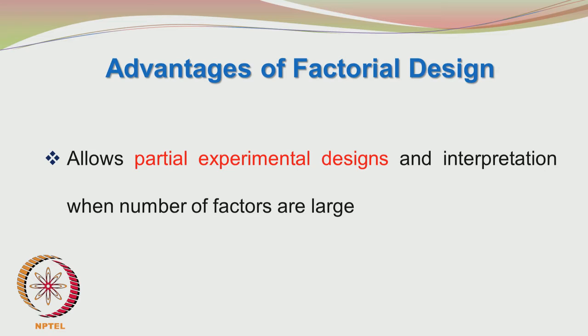Even when you have a factorial design which minimizes the number of experiments, sometimes you may have a large number of factors to study and even a factorial design would make things cumbersome. What you can do is divide your factorial design into several fractions and carry out those fractions in a sequential manner. Even fractions give you valuable information, so you do not have to complete all the fractions — you may stop at any point once you feel you have got sufficient information. It is very flexible.